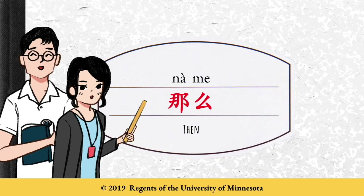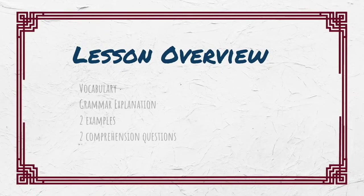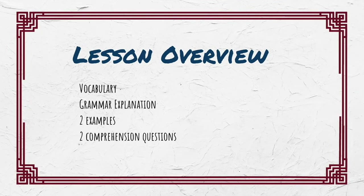大家好. In this lesson, we will introduce the conjunction 那么, which is equivalent to English 'then.' This lesson presents active vocabulary, a short grammar explanation, examples, and comprehension questions.